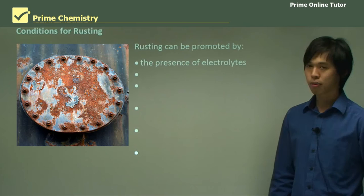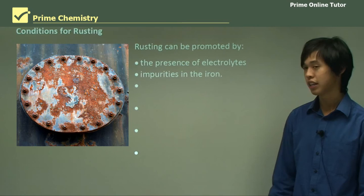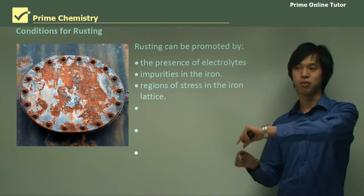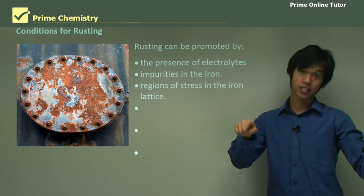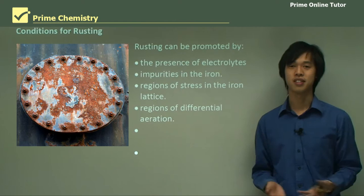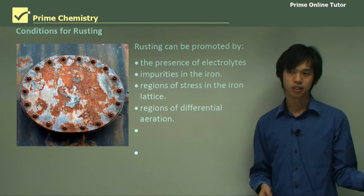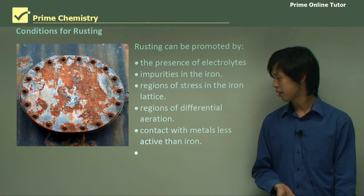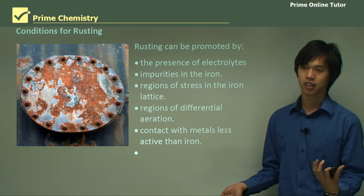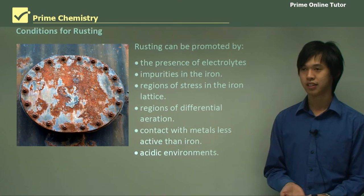The conditions for rusting: we can promote rusting by the presence of electrolytes. Little impurities in the steel can actually help to nucleate sites, helping rust to form. If you stress a particular region — say, bend a piece of iron to 90 degrees — there'd be a lot of stress at the corner, promoting rust there. Regions of differential aeration — where one part has no oxygen and another has a lot — can also promote rust. Attaching zinc to iron could cause rust more readily, and placing it near an acid, which is why we don't make cans out of steel, can promote rust as well.